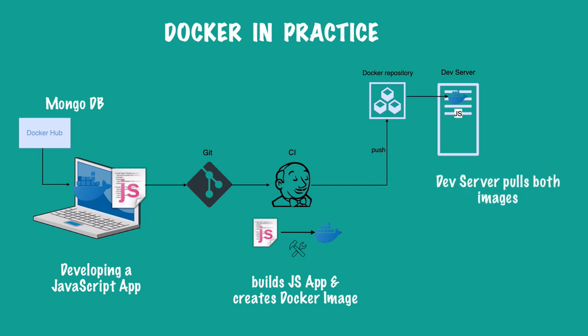The development server pulls the JavaScript application image from the private repository, and also pulls the MongoDB image that the application depends on from Docker Hub. Now you have two containers running on the dev server — your custom container and the publicly available MongoDB container — and they are configured to talk and communicate with each other, running together as an application.